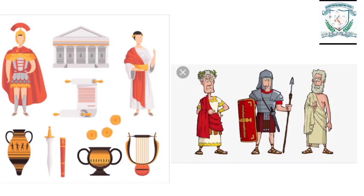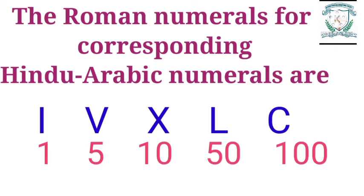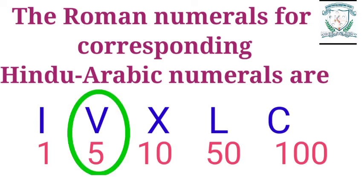The next topic is Roman numerals. The ancient Roman civilization developed their own way of writing numbers using certain symbols called Roman numerals. The Roman numerals for corresponding Hindu-Arabic numerals are: I which represents 1, V which represents 5, X which represents 10, L which represents 50, C which represents 100.